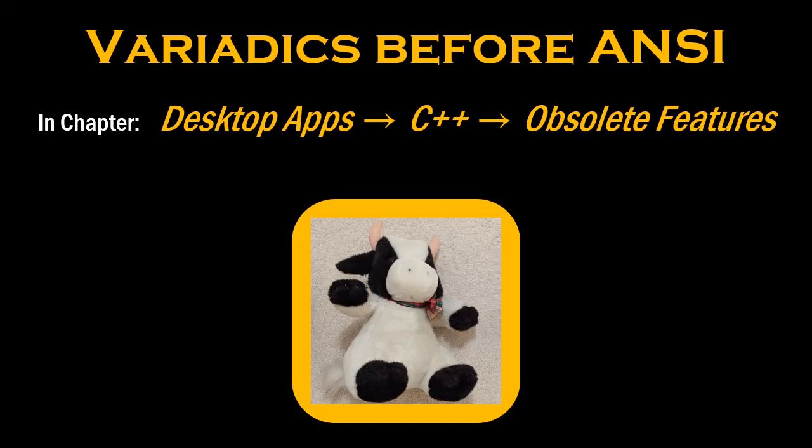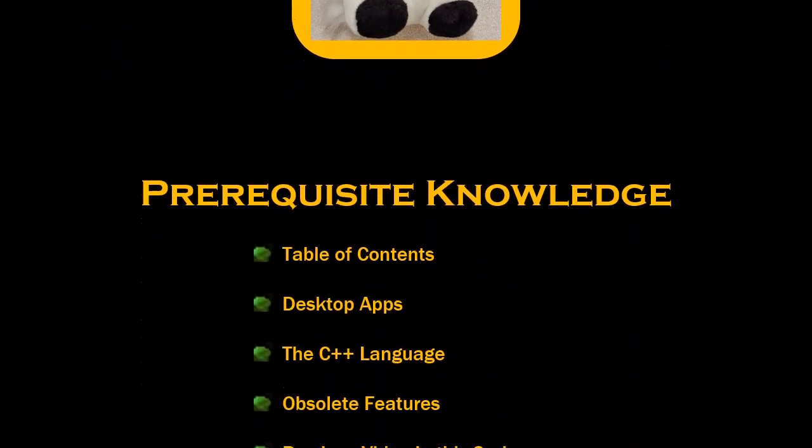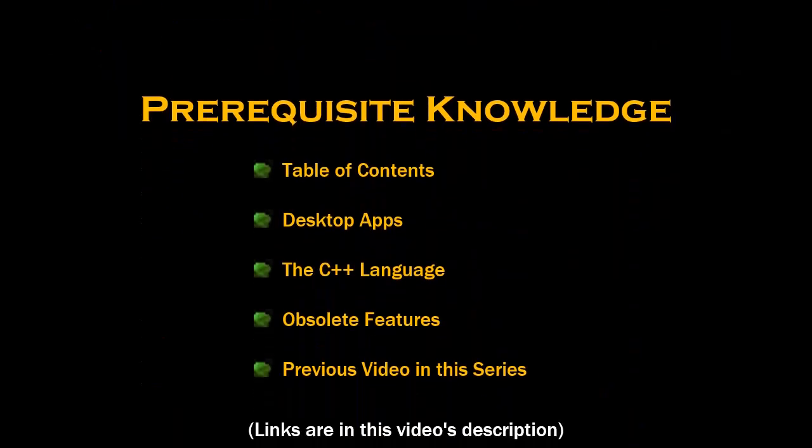Welcome to the Cal Corporation series of videos about software engineering. The topic of this video is the way functions used to have a variable number of parameters. Before proceeding, make sure that you have already watched these other videos first.